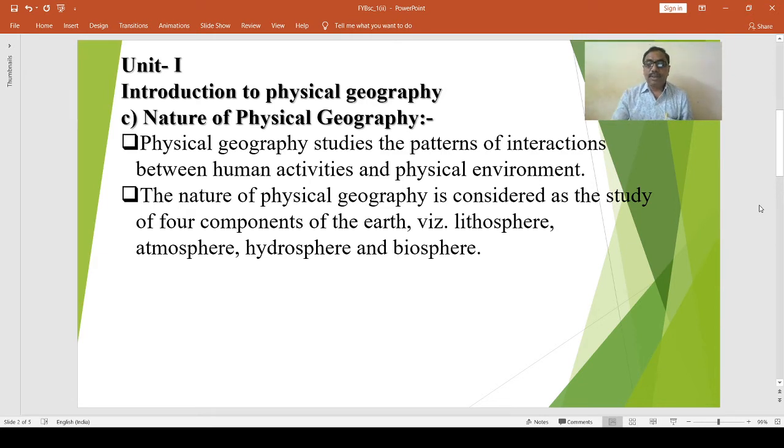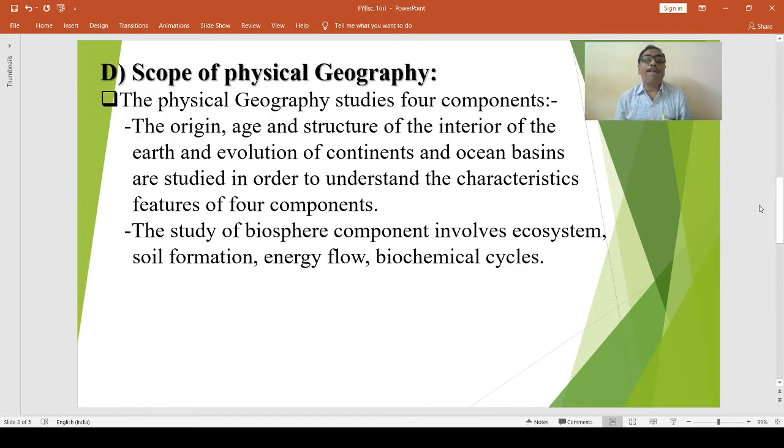The scope of physical geography. The physical geography studies four components. And these components are lithosphere, atmosphere, hydrosphere and biosphere.